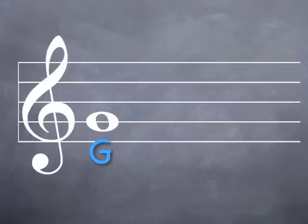If we go up from this line to the space right above it, we have gone up by one step. What comes next in our music alphabet after G? I hope you didn't say H. Our music alphabet only goes up to G.